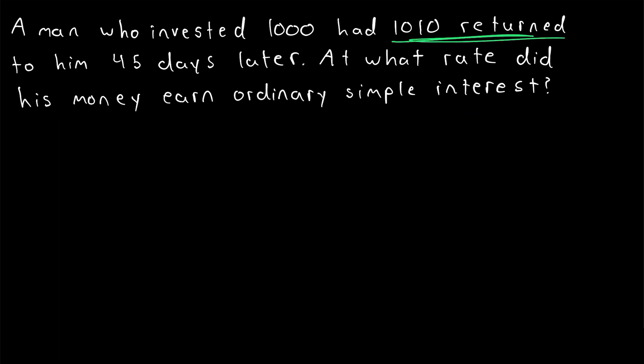Since 1,010 was returned to the man, that is the amount, the principal plus the interest. So we want to set up an equation in which we can solve for the simple interest rate. So we have 1,010, the total amount, is equal to the principal investment, 1,000, multiplied by 1 plus the simple interest rate, which we don't know, so we'll just write R, multiplied by the amount of time that passed, which is 45 days. We want to measure time in years using ordinary simple interest. So we'll calculate that as 45 divided by 360.